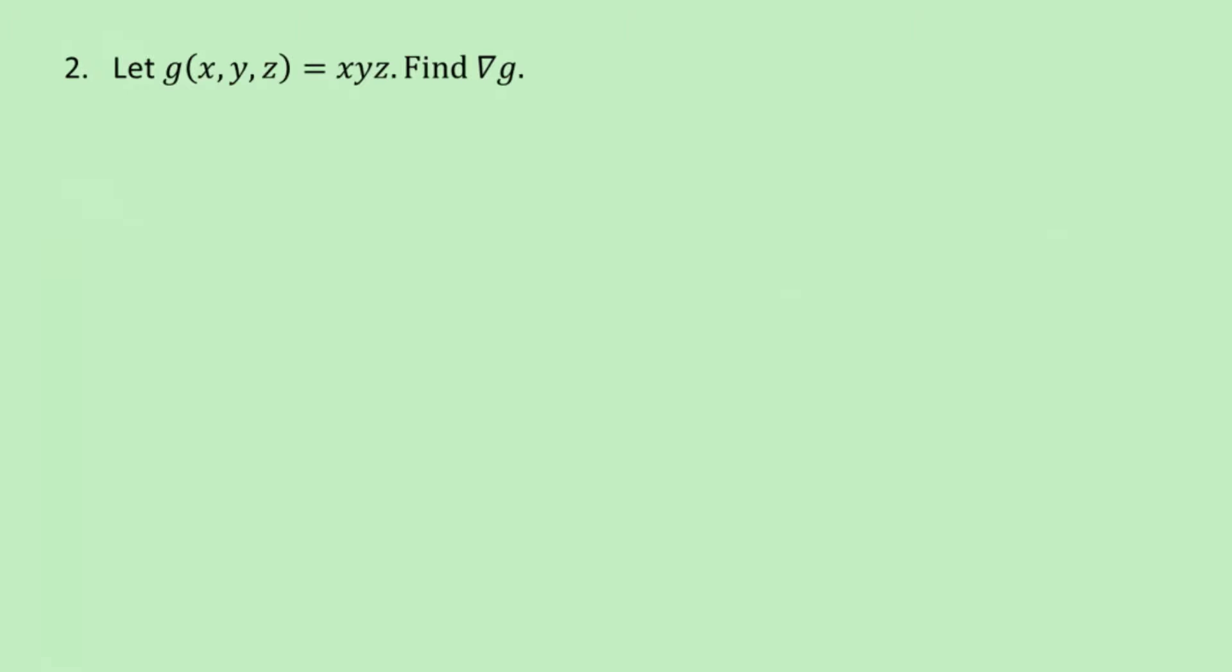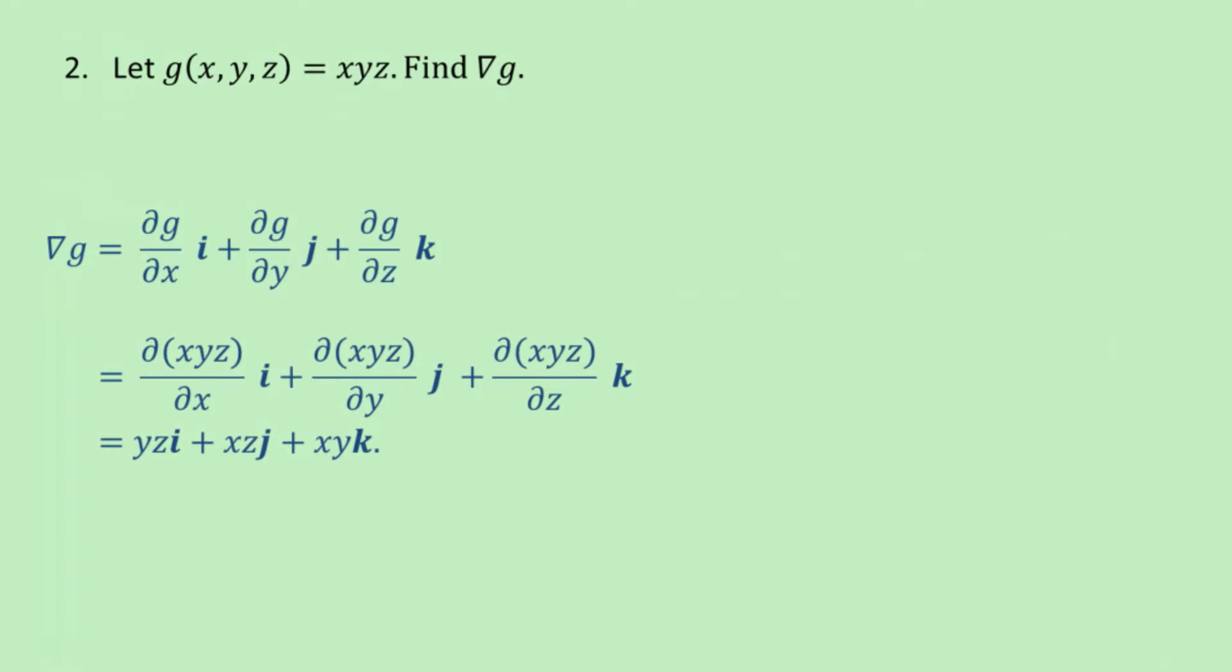In this second question, we have a function of three variables and we need to find the gradient of the function. Now in this case, we're going to have three unit vectors which I've labeled i, j, and k in the direction of x, y, and z respectively. And we follow the same sort of idea, so the gradient of the function is equal to the partial derivative of the function with respect to x times i, plus the partial derivative with respect to y times j, plus the partial derivative with respect to z times k. And you can see all the calculations there.